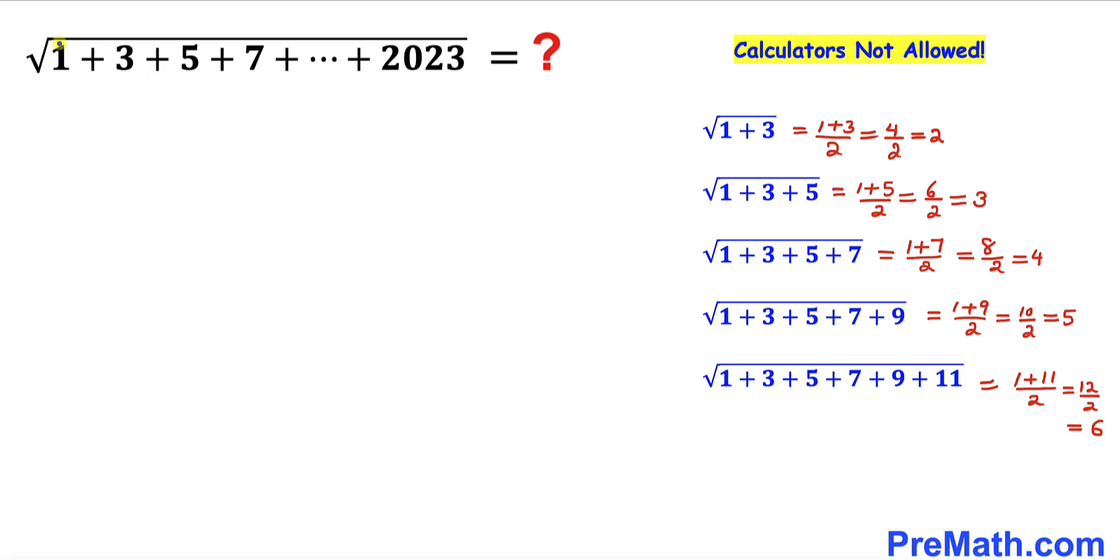Therefore, we're going to use the same analogy. Let's go ahead and add this very first number and the very last number: 1 + 2023, and we're going to divide this number by 2. That's going to give us 2024 divided by 2, which is 1012 as our answer.